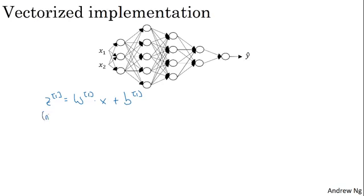x was n0 by 1, and b was n1 by 1. Now in a vectorized implementation, you would have z1 equals w1 times x plus b1.